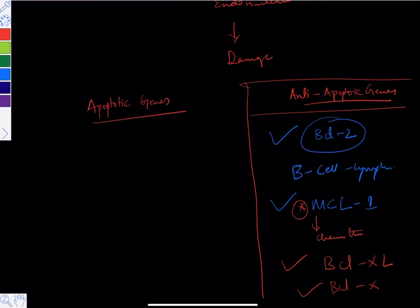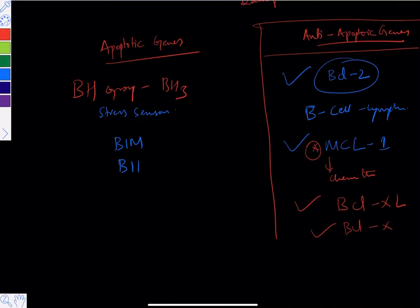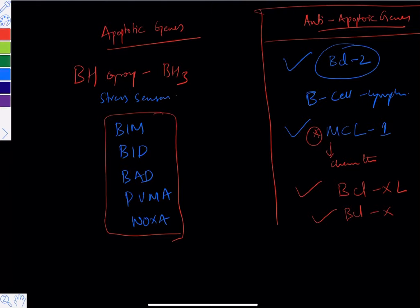Now the pro-apoptotic genes: there is the BH3 group, also called the BH group. These BH3 group proteins are called stress sensors - whenever there is stress or damage to the cell, they get activated. Examples include BIM, BID, BAD, PUMA, and NOXA. These are all examples of BH3 or BH group apoptotic genes.